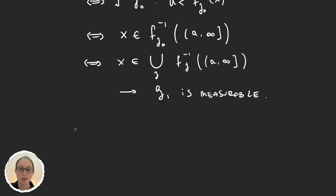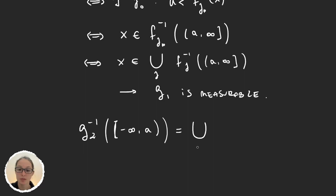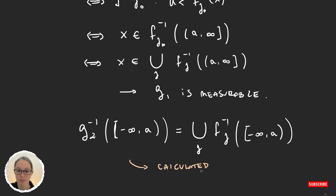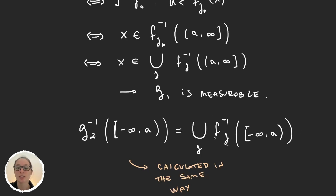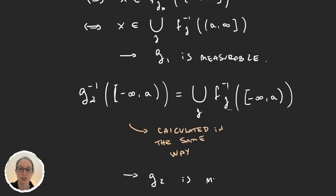Doing the same calculations, we can prove that for g2, the preimage of (−∞, a] is also the union of the preimages of f_j of (−∞, a]. This can be done the same way. So g2 is also measurable — because the preimage of each f_j is in the sigma algebra, and the union of elements in the sigma algebra is also in the sigma algebra.